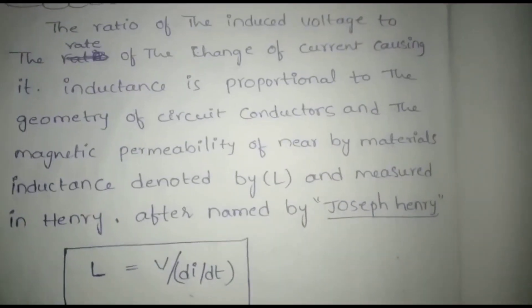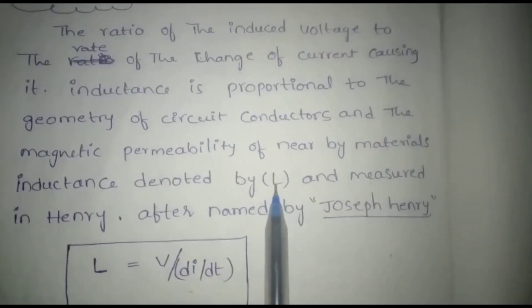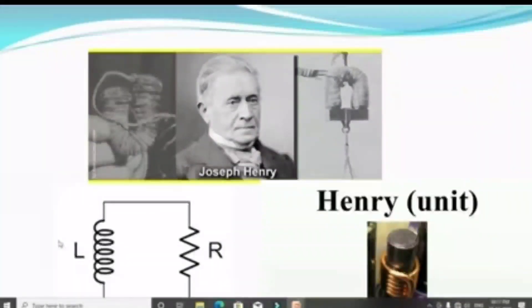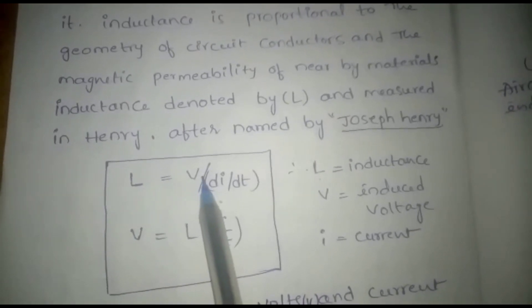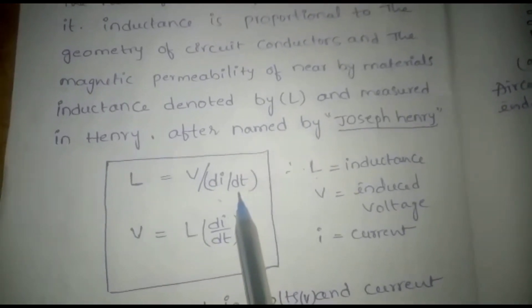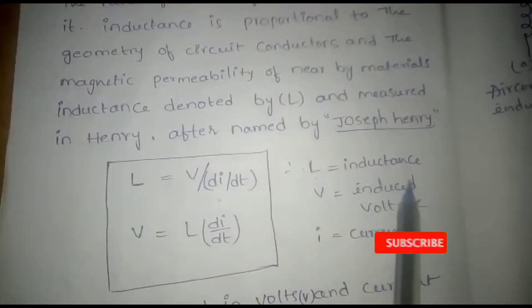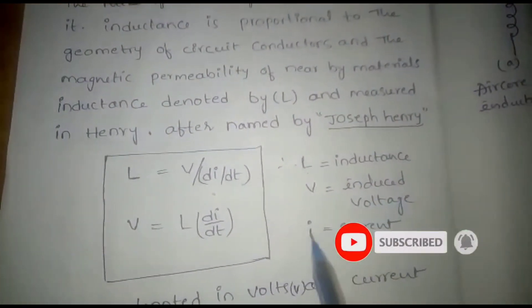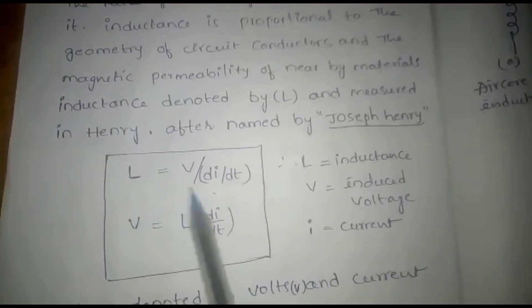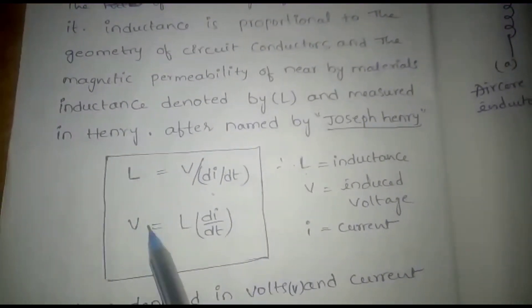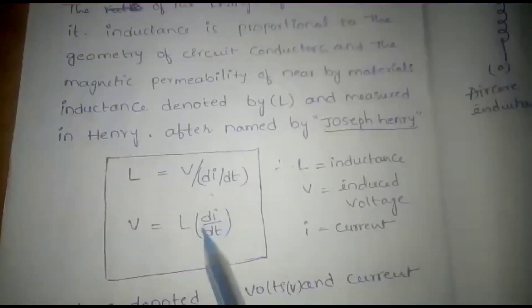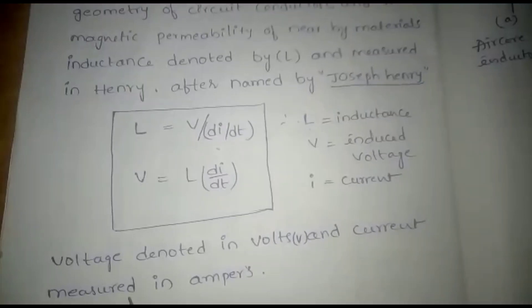Inductance is denoted by capital L and measured in Henries. The unit is named after the scientist Henry. In derivative form, L is inductance, V is the induced voltage, and I is current. The formula is: V equals L times dI/dt — the rate of change of current.